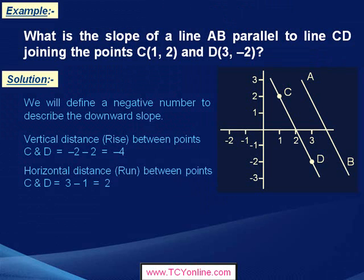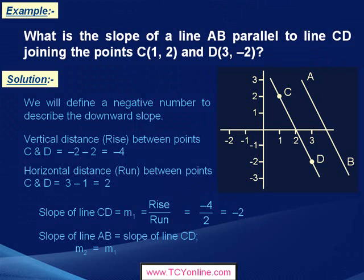While the horizontal distance — that is run — between two points C and D is 3 minus 1, which equals 2. So we can say that slope of line CD, that is rise over run, is equals to negative 4 over 2. Simplifying this, we get negative 2. Now, we are aware that slope of two parallel lines is always the same. So that means slope of line AB, which is parallel to line CD, is also equals to negative 2.